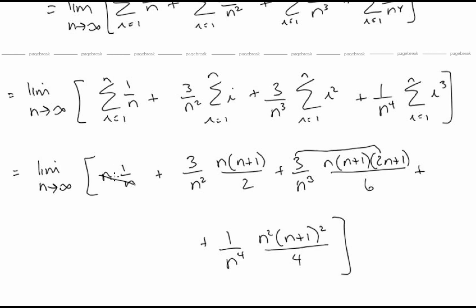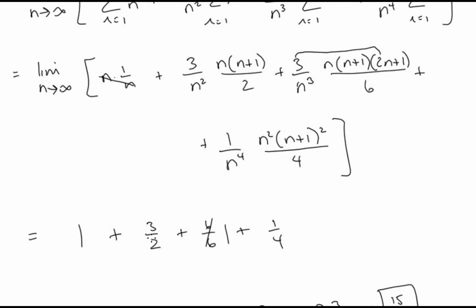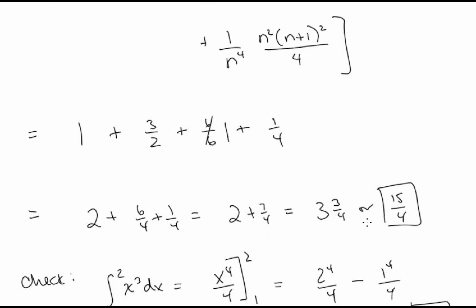The first term gives 1. The second has 3n squared as the leading term in the numerator and 2n squared in the denominator, giving a limit of 3 halves. The third term has 6n cubed in both numerator and denominator, so the limit is 1. The last term has n to the fourth over 4n to the fourth, giving a limit of 1 fourth. Summing all terms gives 15 fourths.